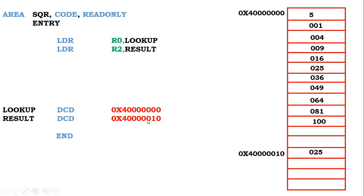Next, LDR R2 loads the address of the result location — that is 4 followed by 0 0 1 0 — into R2. This is the starting address of the memory where we will store the result. For example, if the input is 5, then 5 squared is 25, and we store 25 at that location. R0 holds the base address of the lookup table and R2 holds the result address.